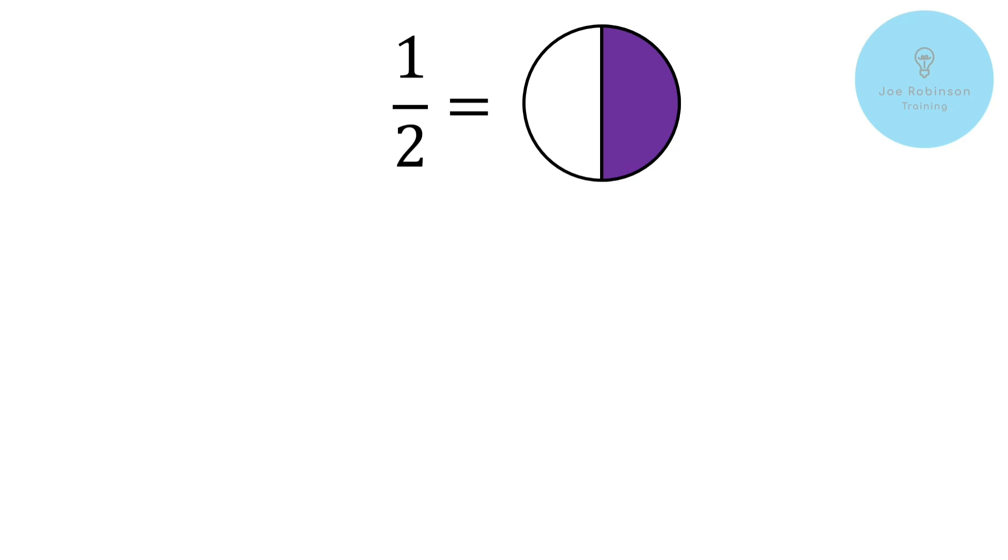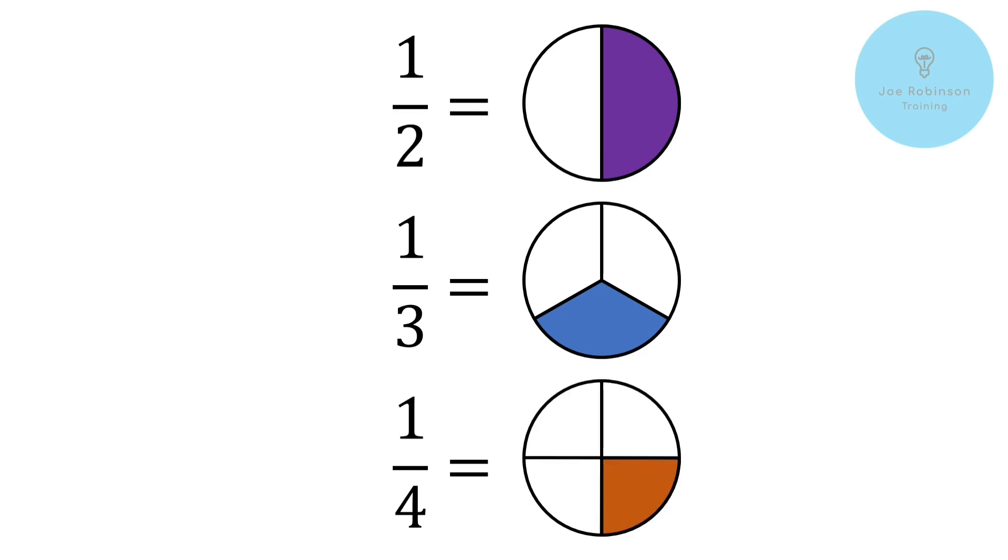The next fraction that we're going to look at briefly is one third, so our pizza now looks like this. It's been split into three parts and we're interested in one of those parts, so our pizza now looks like this. Finally, we've got a fraction of one quarter or one divided by four, so here you can see that our pizza has been split into four equal parts and we're interested in just one of those parts. So so far that's all pretty simple and straightforward.